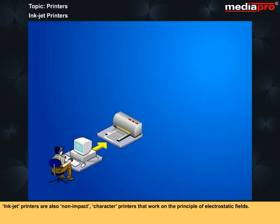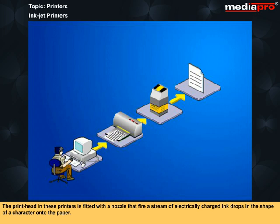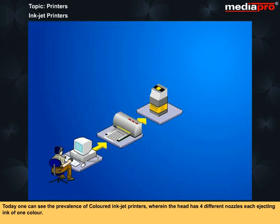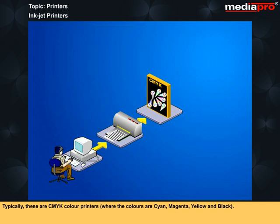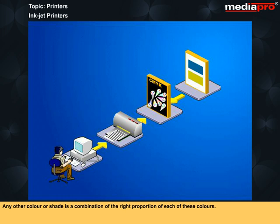Inkjet printers are also non-impact character printers that work on the principle of electrostatic fields. The print head in these printers is fitted with a nozzle that fires a stream of electrically charged ink drops in the shape of a character onto the paper. One can use any quality of paper on these printers. Today, one can see the prevalence of colored inkjet printers, wherein the head has four different nozzles, each ejecting ink of one color. Typically, these are CMYK color printers where the colors are cyan, magenta, yellow, and black. Any other color or shade is a combination of the right proportion of each of these colors. Inkjet printers are less noisy and less expensive than dot matrix printers.